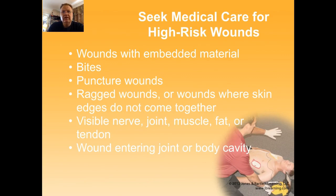High-risk wounds include those with something still stuck inside that you can't remove, bite wounds, and puncture wounds — though in wilderness settings you may need to irrigate those well and dress them. Ragged wounds with loss of material, wounds where edges don't come together, wounds where you can see nerves, joints, muscle, tendon, or fat — yellow pearl-like tissue visible under the skin indicating a deeper wound — are all high risk. Any wound going into a joint or body cavity is especially dangerous because you can introduce bacteria into normally sterile spaces.